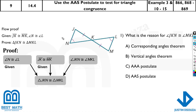They have given you a flow proof — basically flow charts. You can see parts here, and then all of it points to the reason and why we are proving it. It's given that JK and MK are equal, and angles N and L are equal to each other.